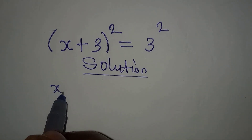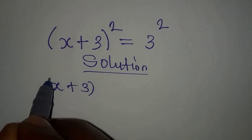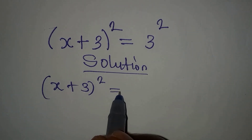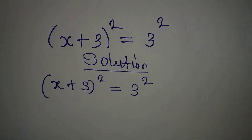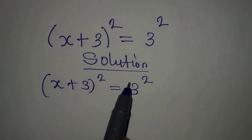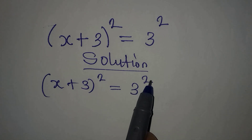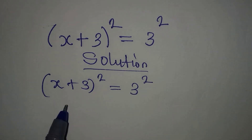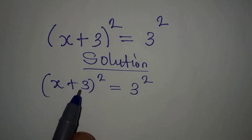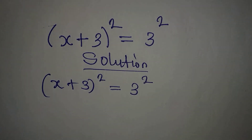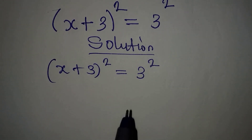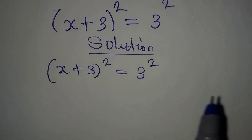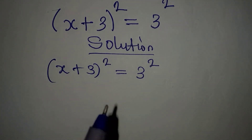We have (x + 3) to the power of 2 equal to 3 to the power of 2. The powers are the same. You can decide to equate the bases, but that will not give you a complete solution. To get the complete solution, we can do this in two ways.